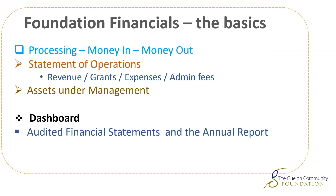So that's the disclaimer, as they call it in the biz. All of what ends up in the foundation financials is really money in and money out. We refer to it here as processing. It all ends up somewhere on a statement of operations — or internally we refer to it as a statement of activities — and it's broken down into several elements: revenues, grants, expenses, and administrative fees.